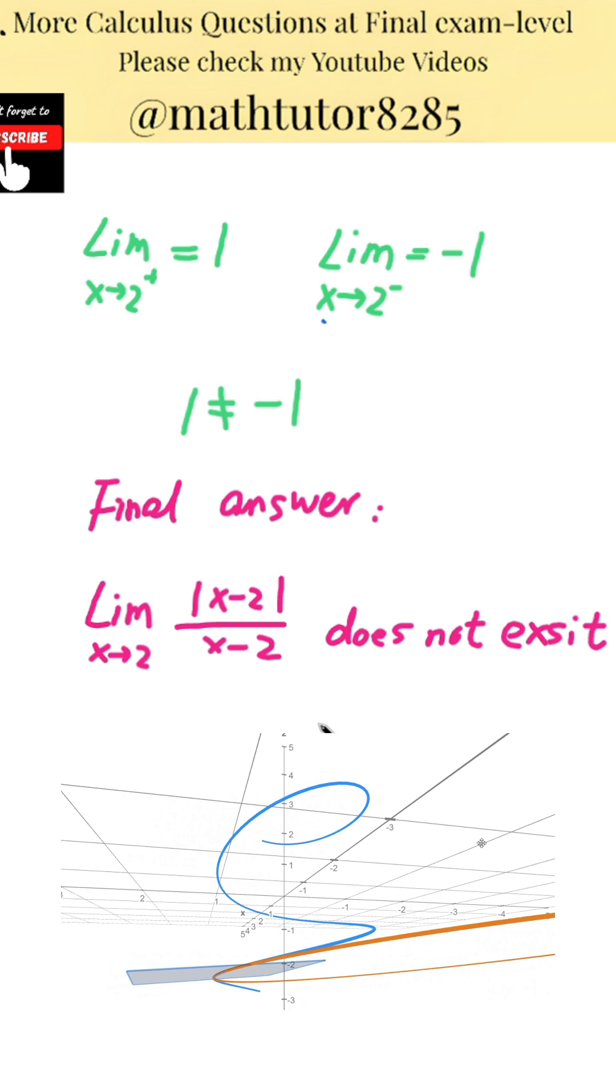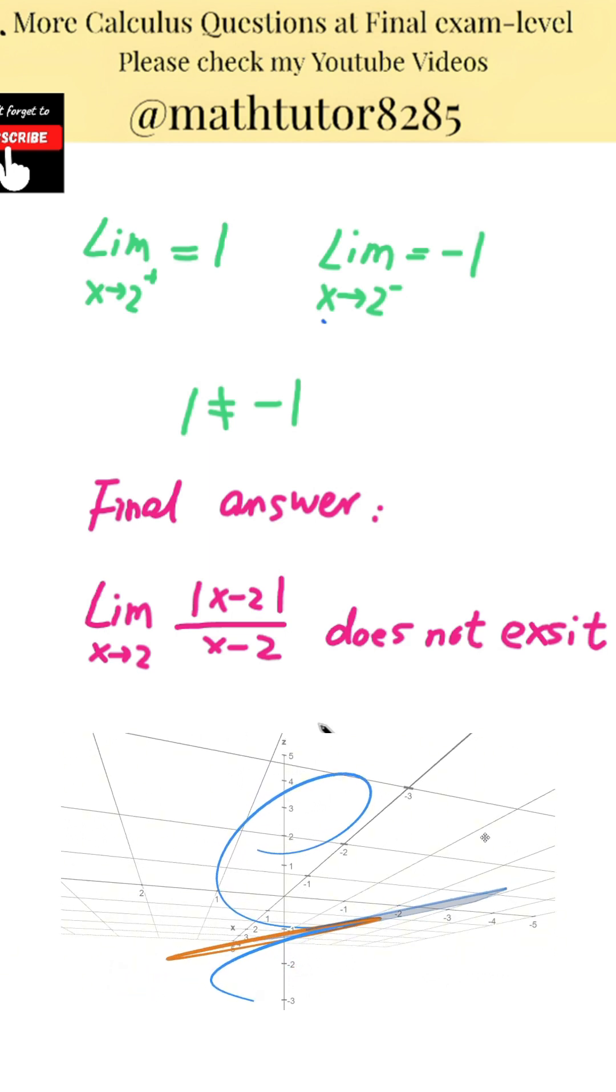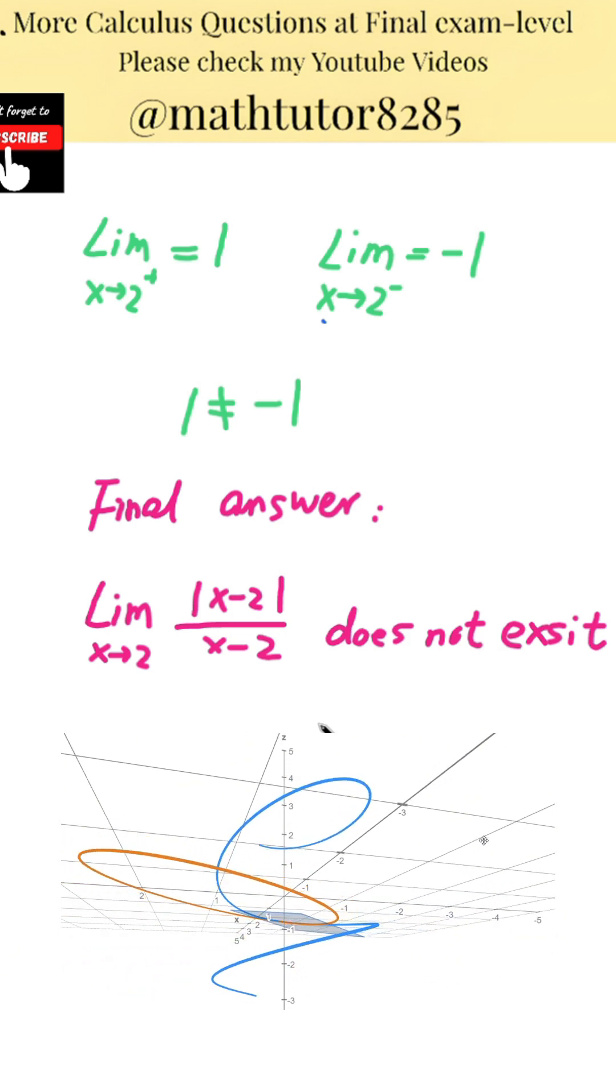This is a step up in difficulty from basic absolute value limits like absolute x over x, because here the critical point isn't zero, it's another number like two. So keep your eyes sharp for where the absolute value switches behavior. Keep practicing with different values, and soon this will feel second nature.